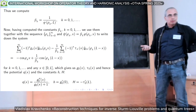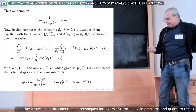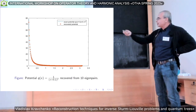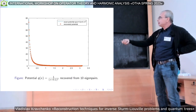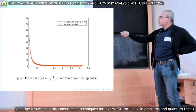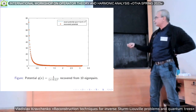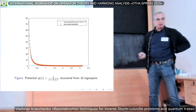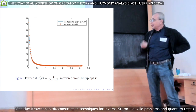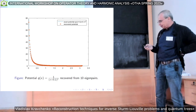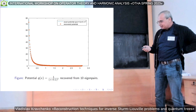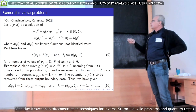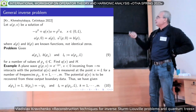This is just an illustration for such a potential, showing how it is approximated. This example uses just ten eigenpairs, and this is the resulting accuracy. We have many more examples, of course, but I will not dwell on this.